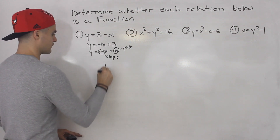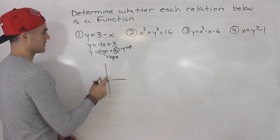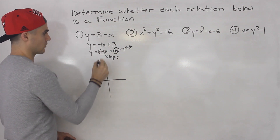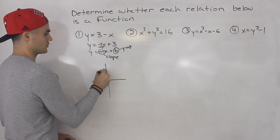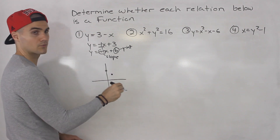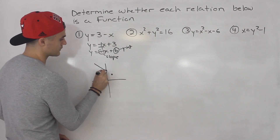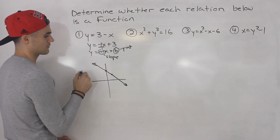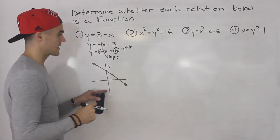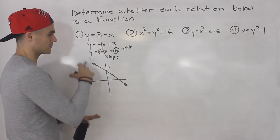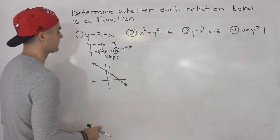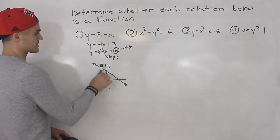So if we were to roughly draw this, the y-intercept would be 3, so that would be up here. The slope would be negative 1, so it's negative 1 over 1 — you rise down by 1 and run by 1. So roughly, this line would look something like that: a downward sloping line, with the y-intercept at 3. If you want something more precise, you can use a table of values. I'm just drawing a rough diagram for now.